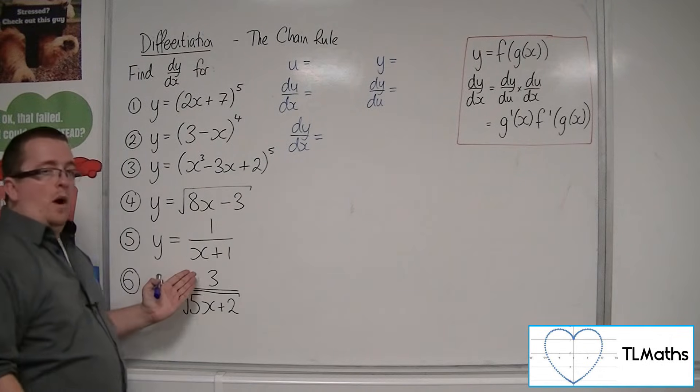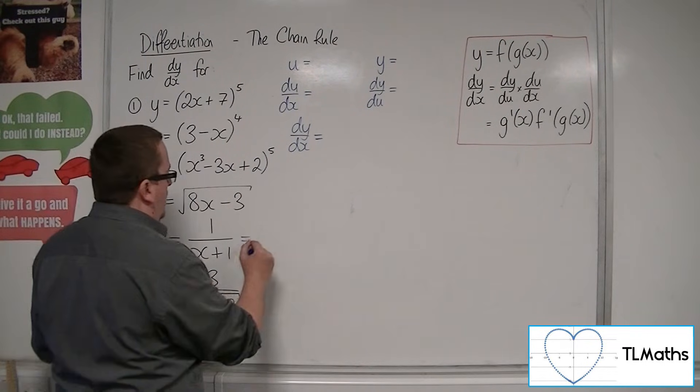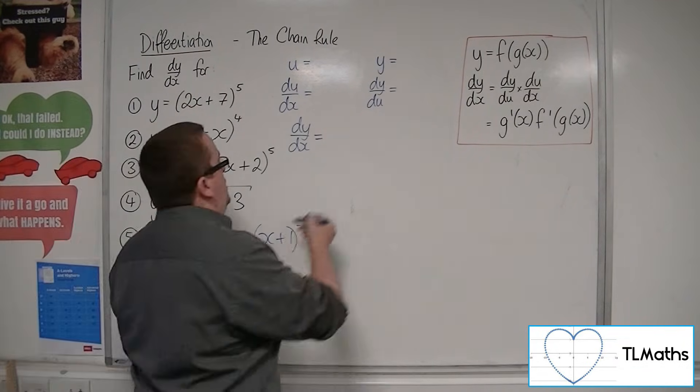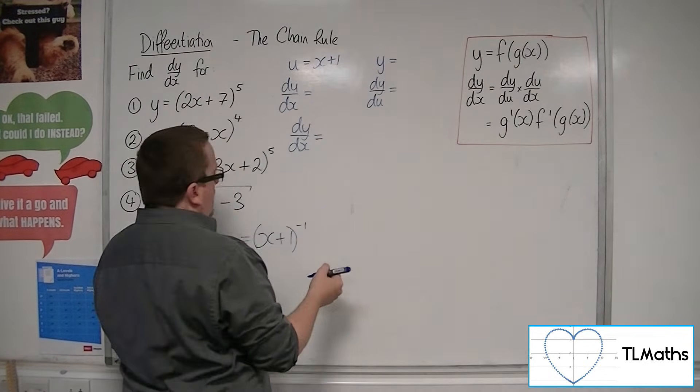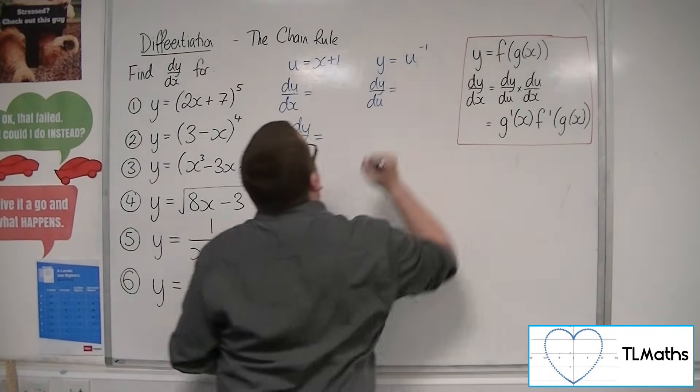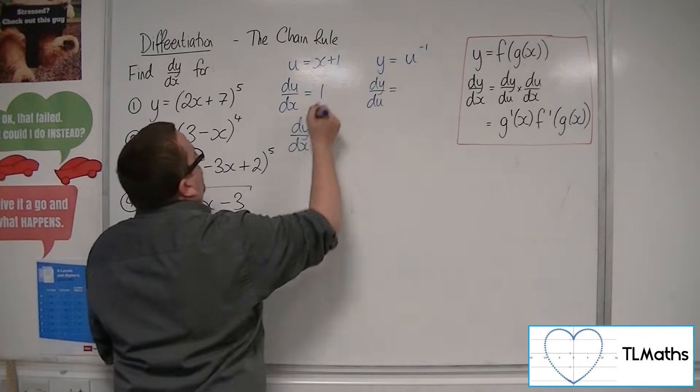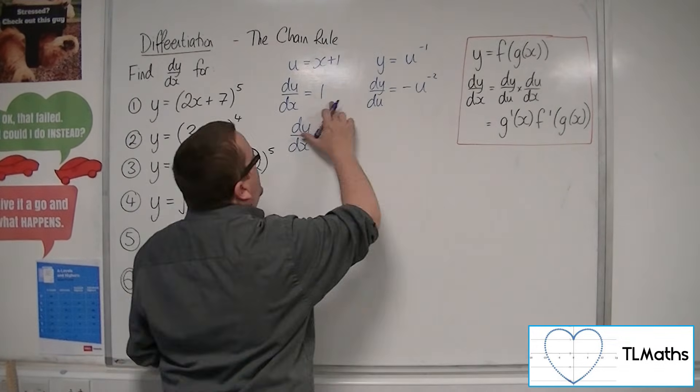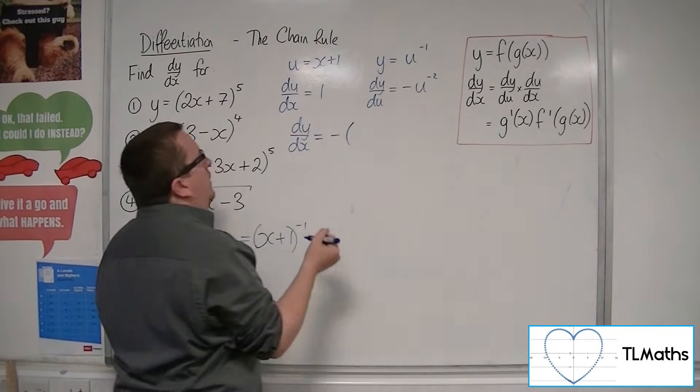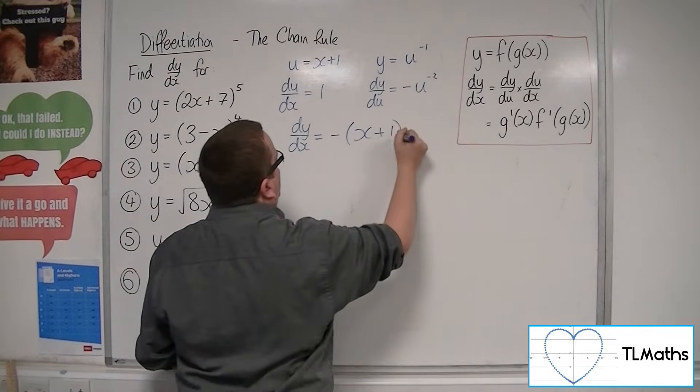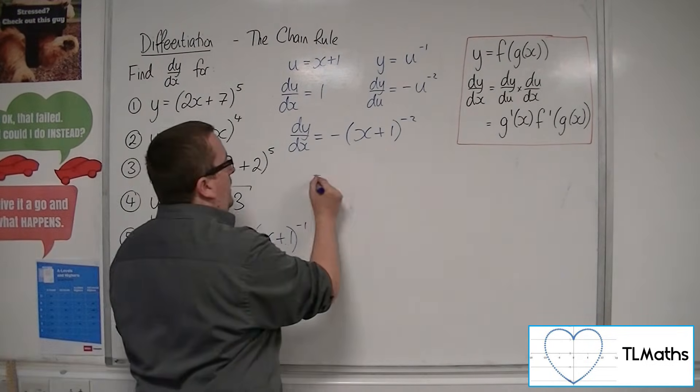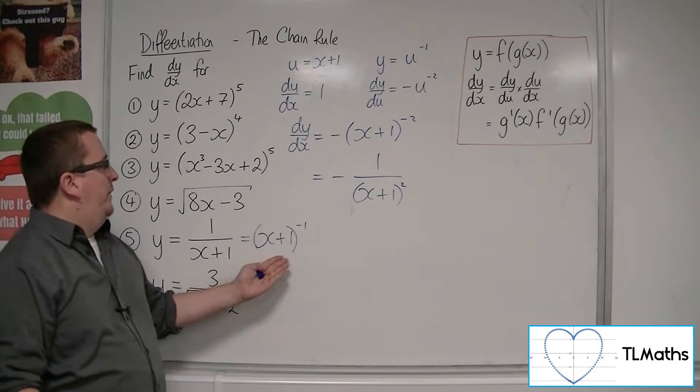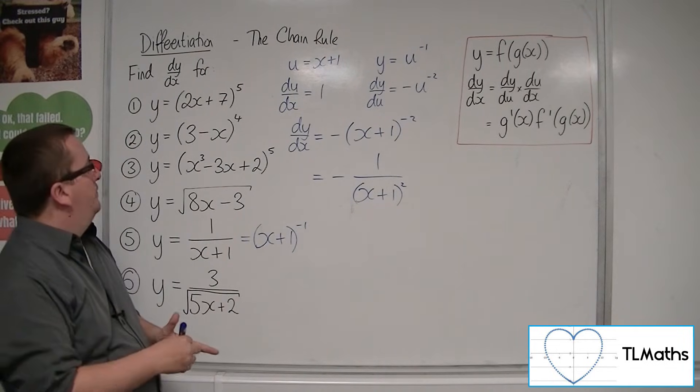Number 5. y equals 1 over x plus 1. So I'm going to rewrite that as x plus 1 to the minus 1. So the u is clearly the x plus 1. y must therefore be u to the minus 1. So du by dx is just 1. dy by du is minus u to the minus 2. And when I multiply these together, I'm just going to get minus u, which was the x plus 1, to the minus 2. Which you can write as minus 1 over x plus 1 squared. So this differentiates to that. And that's number 5.